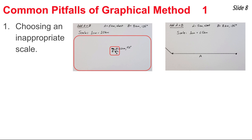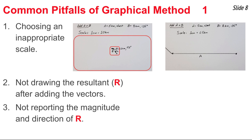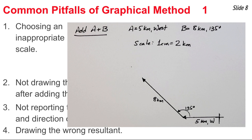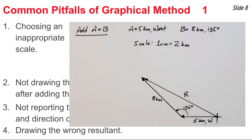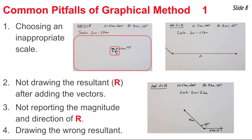The next set of errors involve the resultant. You might not draw the resultant at all after adding the vectors. Or you draw the resultant but don't report its magnitude and direction — the resultant is the answer, so you must include both. A third problem is drawing the wrong resultant or measuring the direction at the arrowhead of the resultant instead of at the tail. In one example, adding A and B with no resultant shown is a pitfall. Drawing A and B with a resultant but no measured magnitude and direction is also a problem. Measuring direction at the arrowhead rather than the tail of the resultant is another common error.